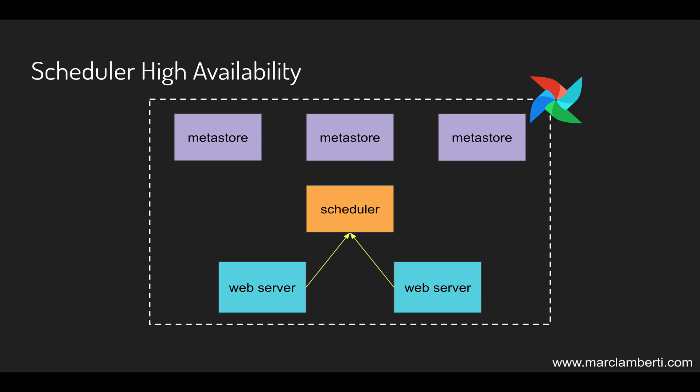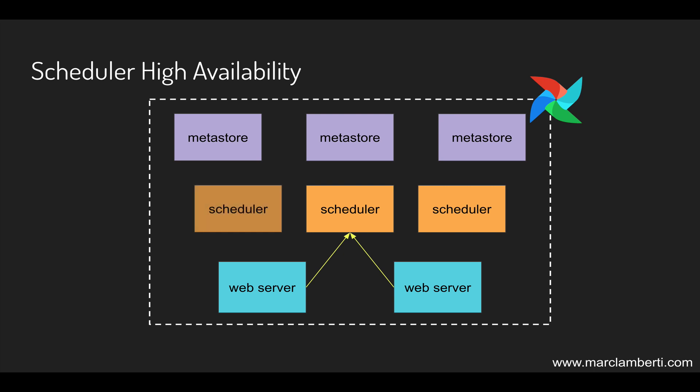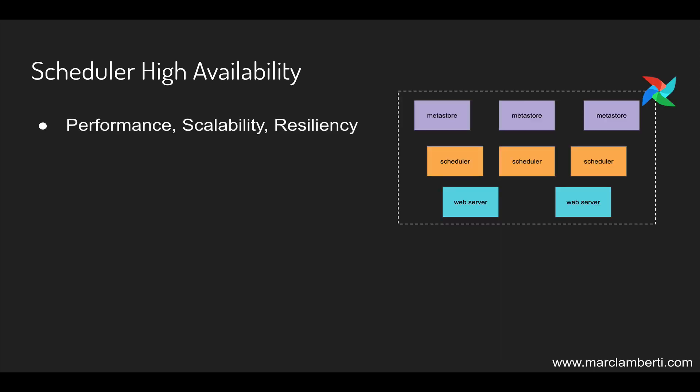But what about the scheduler? Currently if the scheduler goes down, no tasks will be scheduled anymore, and so it represents a single point of failure. Well, that's going to end with Airflow 2.0. You will be able to have multiple schedulers running at the same time, so that if one scheduler goes down Airflow will still be able to schedule tasks. This will improve performance by reducing task-to-task schedule lag, increase scalability by increasing task throughput — just a matter of adding a new scheduler — and improve resiliency since Airflow will continue to schedule tasks.